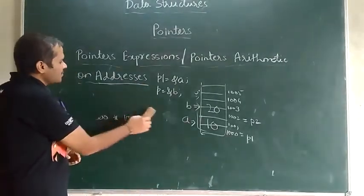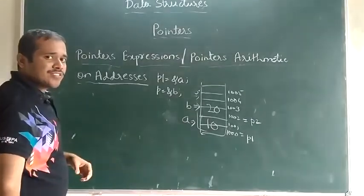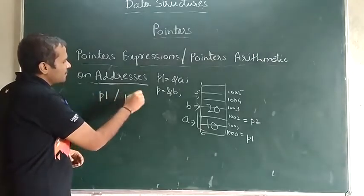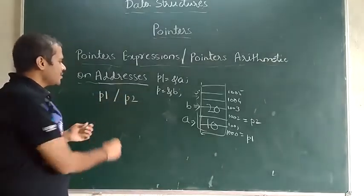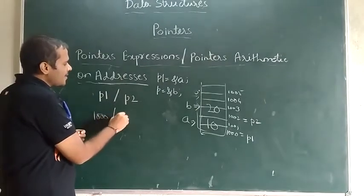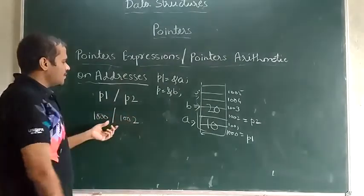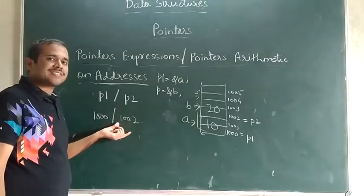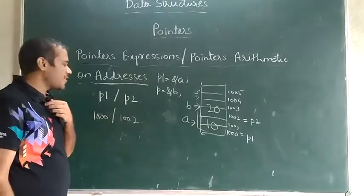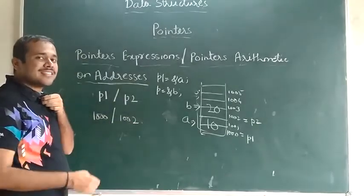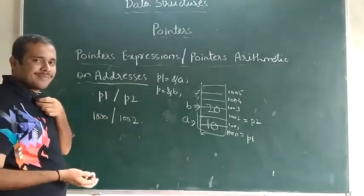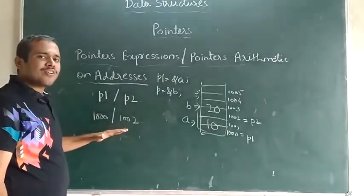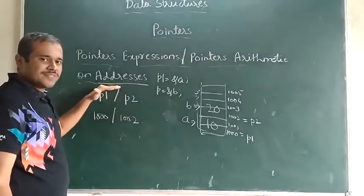Next, let us try division — p1 divided by p2, which is 1000 divided by 1002. The output may be a decimal like 0.something, and that address will obviously not be available in your computer. So division on addresses is also not possible.